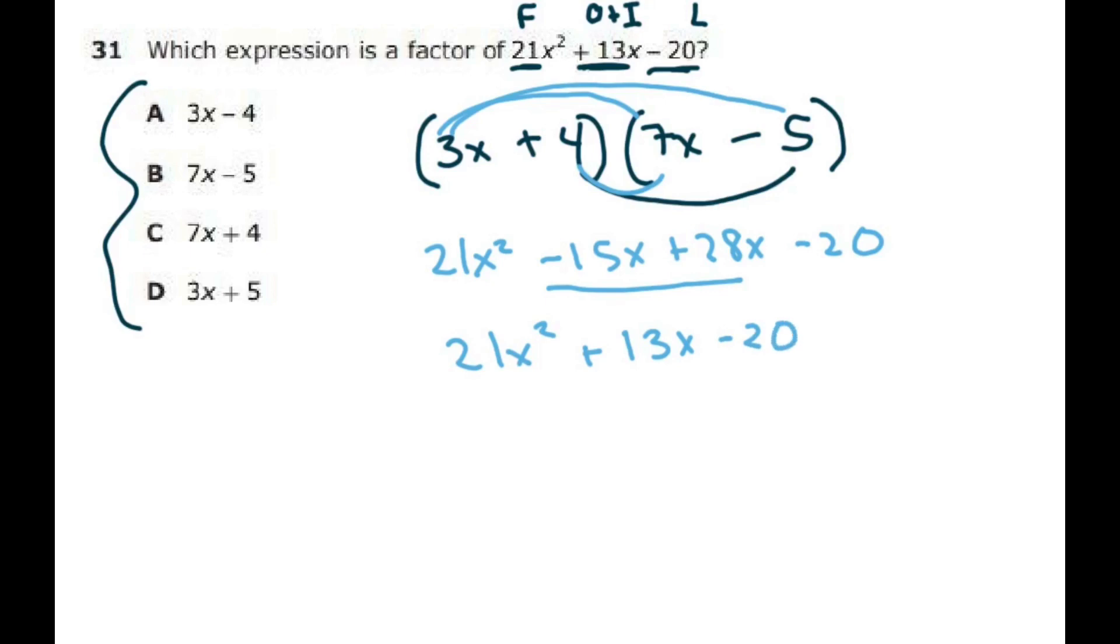So if you would have written something out like 3x minus 4 and 7x plus 5, you would have got 15, you would have got a negative 13. And if you changed around your 4 and 5s, you would have got something else.